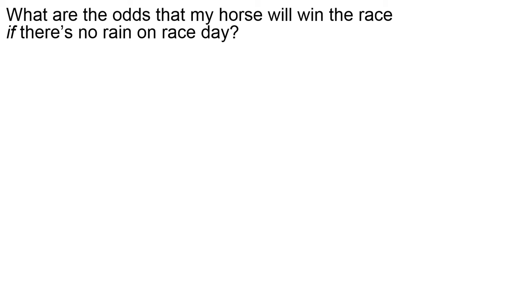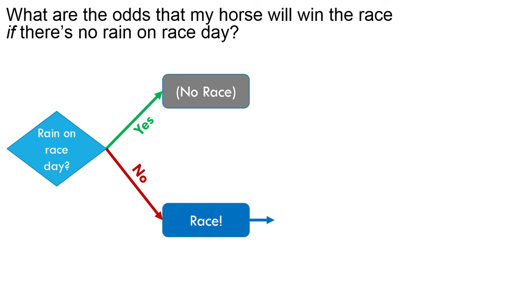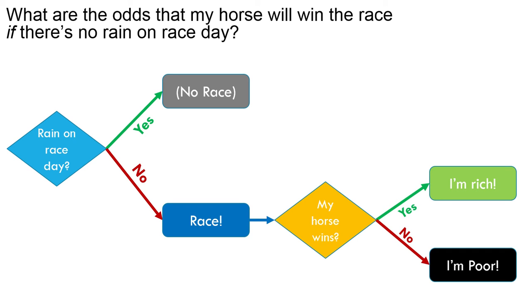So let's look at this example: what are the odds that my horse will win the race if there's no rain on race day? You have to have the condition first. So first we worry about whether there's rain on race day — that can happen two ways. I phrased it as a yes-no thing: is there rain on race day? The event can go one of two ways: yes, rain, or no rain. If there's rain on race day, you neither win nor lose because there's no race. But if there's no rain, then you have a race and a second event — now, what's the probability that my horse wins? Yes, winning; no, not winning.